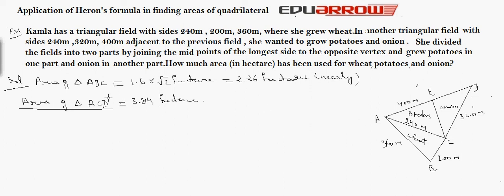So here, C divides triangle ACD in 2 equal parts. So the area of triangle AEC is equal to area of triangle DEC, is equal to 3.84 divided by 2. That is equal to 1.92 hectare. Therefore, we can say here 2.26 hectare is required for wheat and 1.92 hectare is required for potatoes and 1.92 hectare is required for onions.